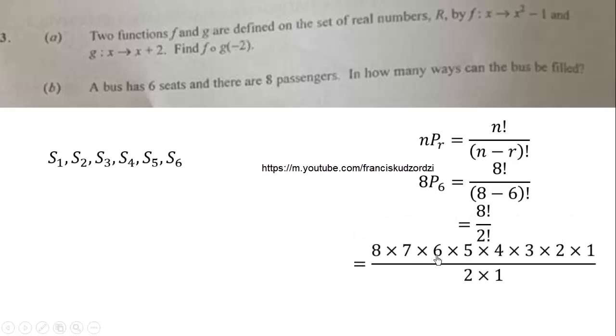When we expand this, we obtain 8 × 7 × 6 × 5 × 4 × 3 × 2 × 1 over 2 × 1, where we can simplify and multiply the results to obtain 20,160 ways.